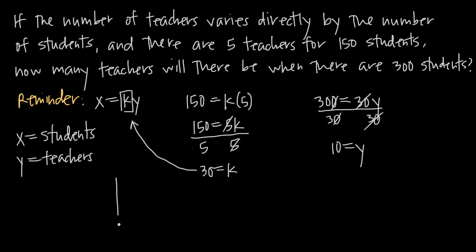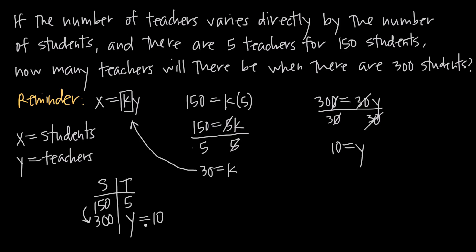This makes sense — drawing a little chart: we had 150 students and 5 teachers, and now we want 300 students. Notice that 150 × 2 = 300, so we doubled the number of students. Since they vary directly, we should also double the number of teachers: 5 × 2 = 10. That's a logical check, but it's important to know the formula because problems aren't always this simple.